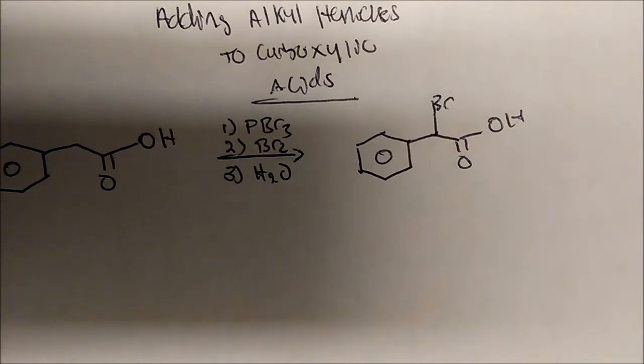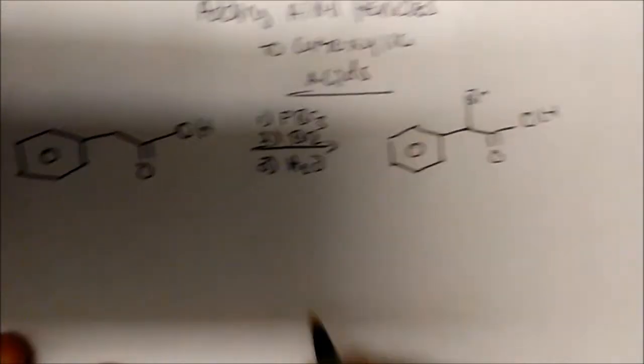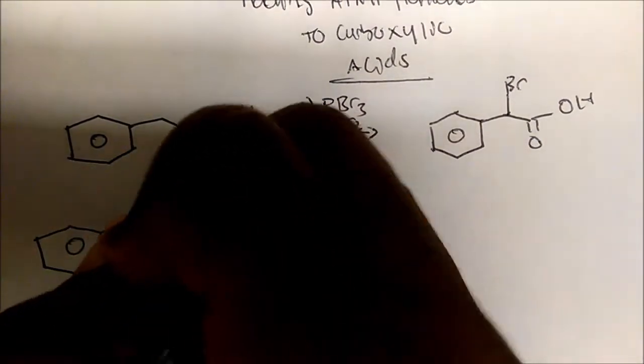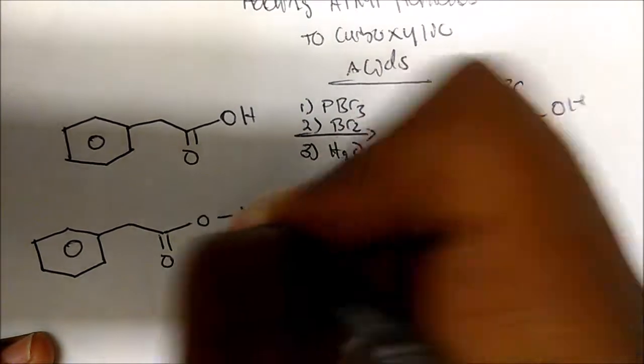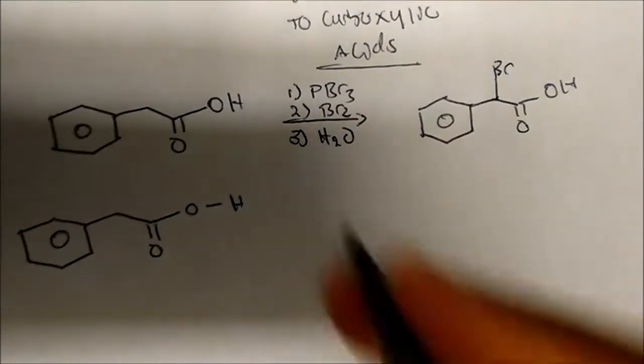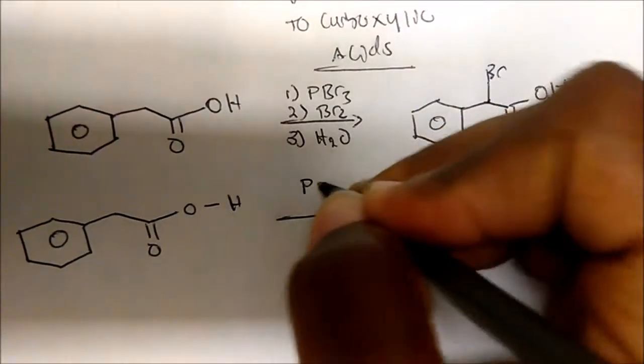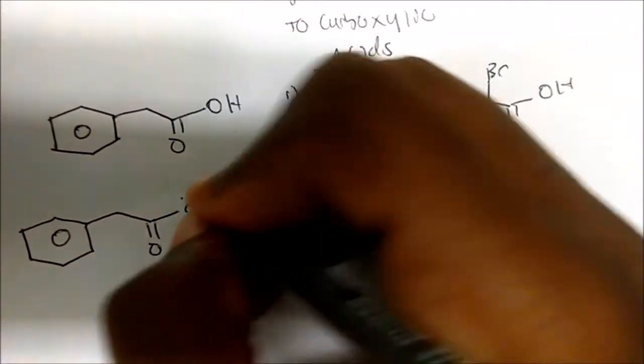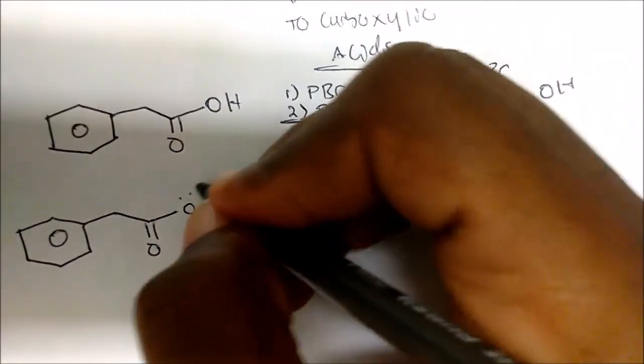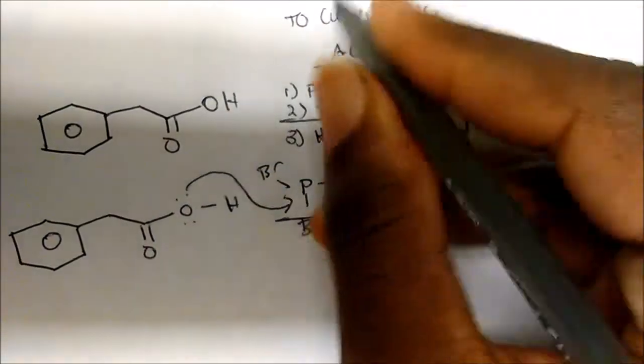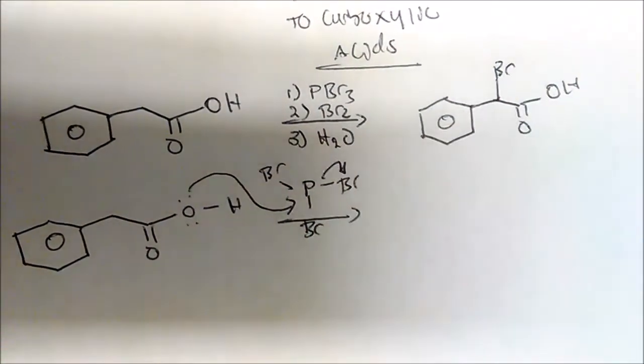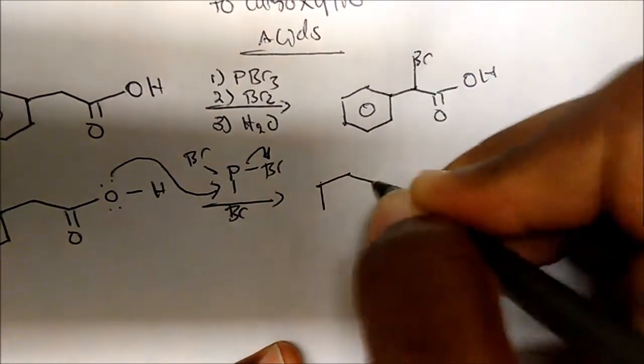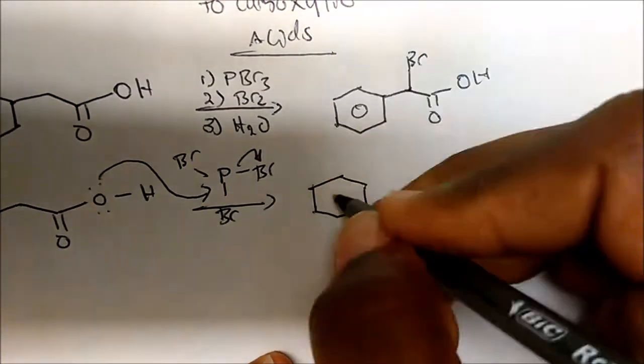Now how do we get there? Well, let's go through this mechanism. So we have the carboxylic acid, and it's gonna attack PBr3 in the first step. PBr3 looks something like this. So the oxygen will come in, attack the phosphorus atom, and displace the bromine. Displace one of the bromines. So now we come to a structure that looks something like this.